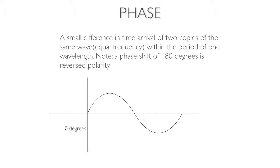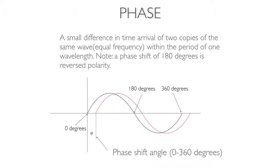Let's talk about phase — phase is different from polarity. There is one point where phase shift equals polarity: when the phase shift is 180 degrees, that is equivalent to reverse polarity. But what phase really is, is the same wave delayed by a small amount — and that amount has to be within one wavelength of that wave. That shift can be from zero through 360 degrees. At 180 degrees, you're out of polarity.